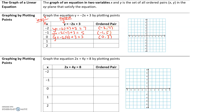We can guess the next y value will be 1. Let's check: y = -2(1) + 3 = -2 + 3 = 1. So we have (1, 1). Finally, with x = 2: y = -2(2) + 3. Negative times positive is negative, so -4 + 3 = -1. Our ordered pair is (2, -1).